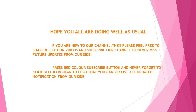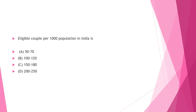Let's discuss questions one by one. Question: Eligible copper per 1000 population in India — this question is regarding contraceptive eligibility. Option A: 50 to 70, Option B: 100 to 120, Option C: 150 to 180, Option D: 200 to 250. Answer to this question is Option C, that is 150 to 180.